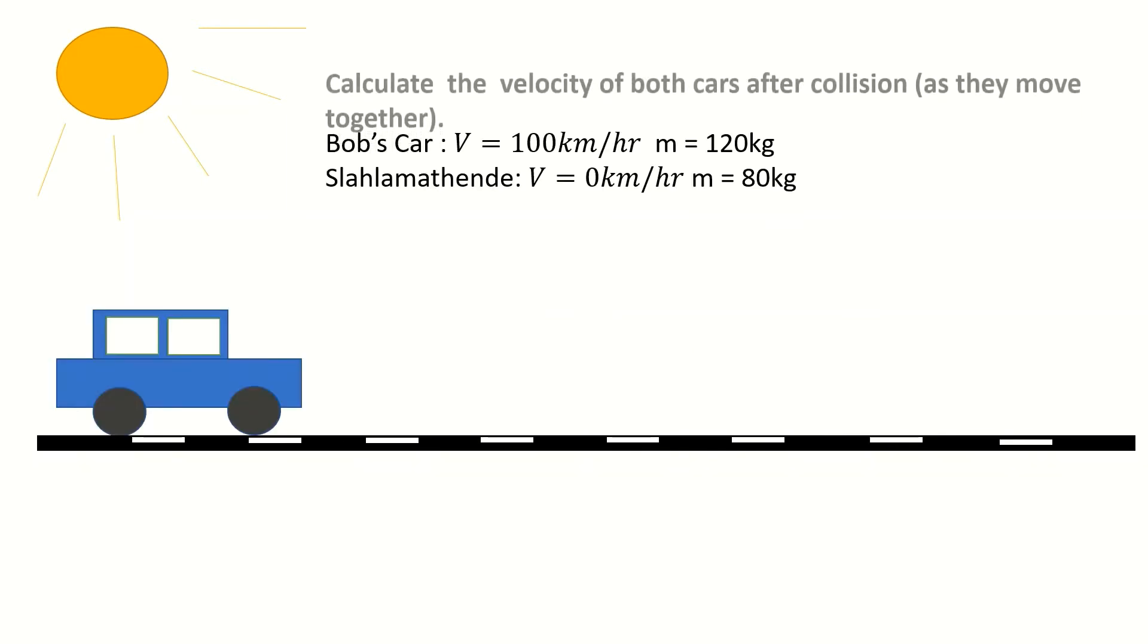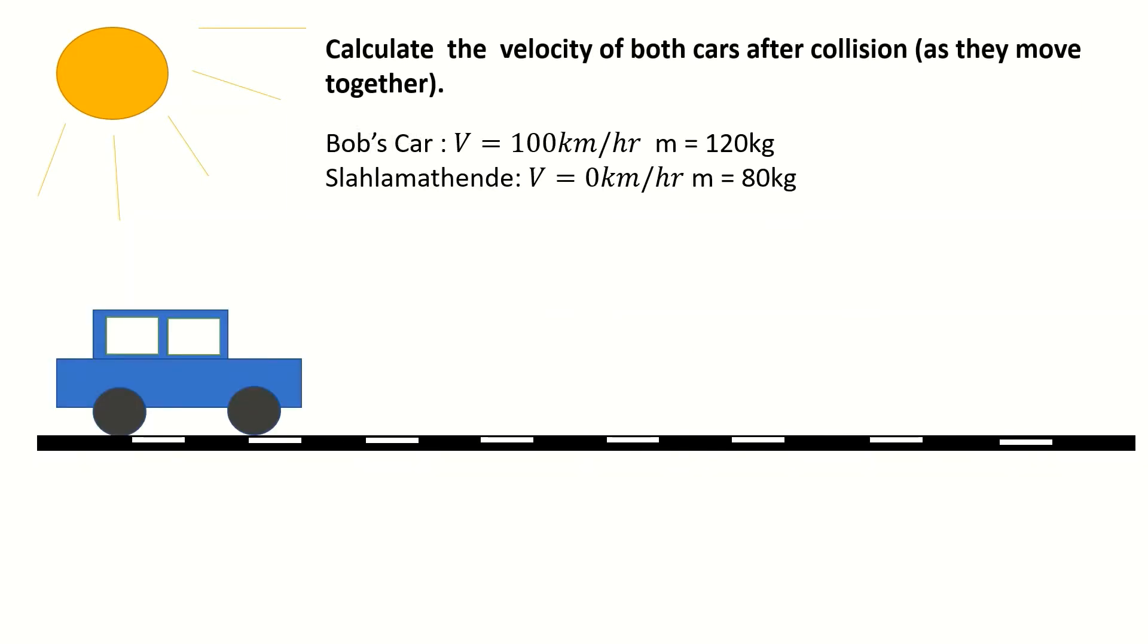Bob's car was traveling at a hundred kilometers per hour and had a mass of 120 kilograms. The slasha matende had a mass of 80 kg and was stationary.